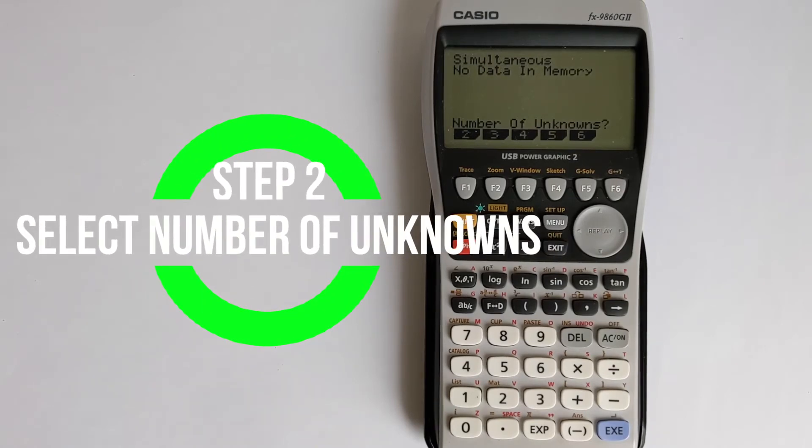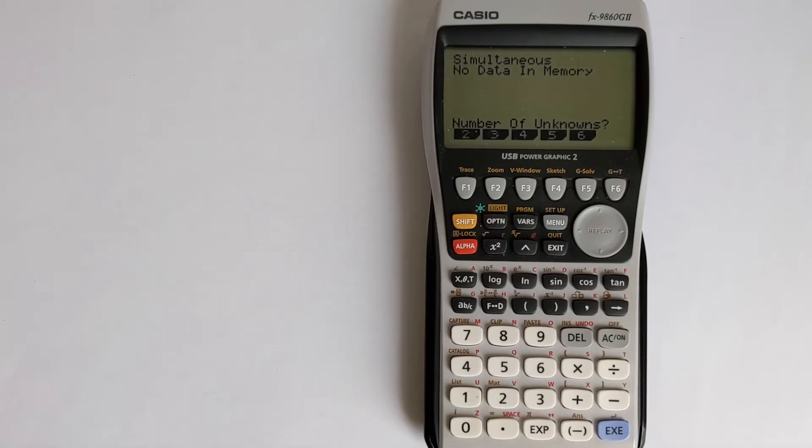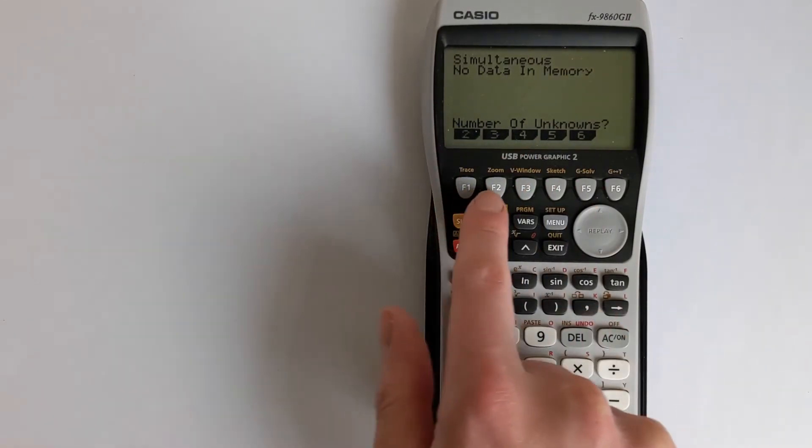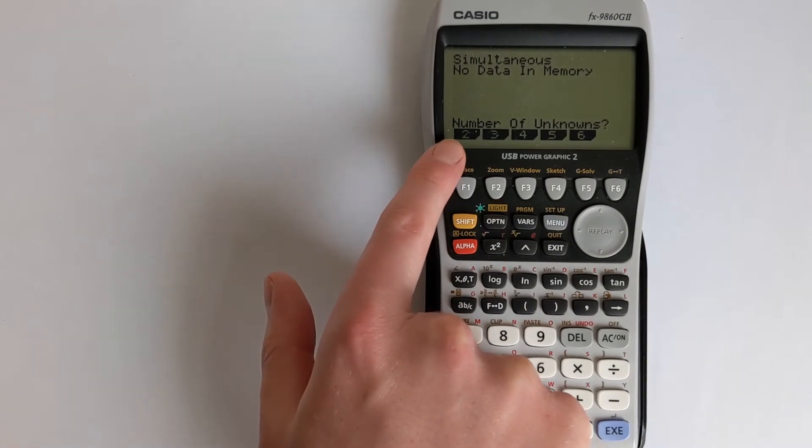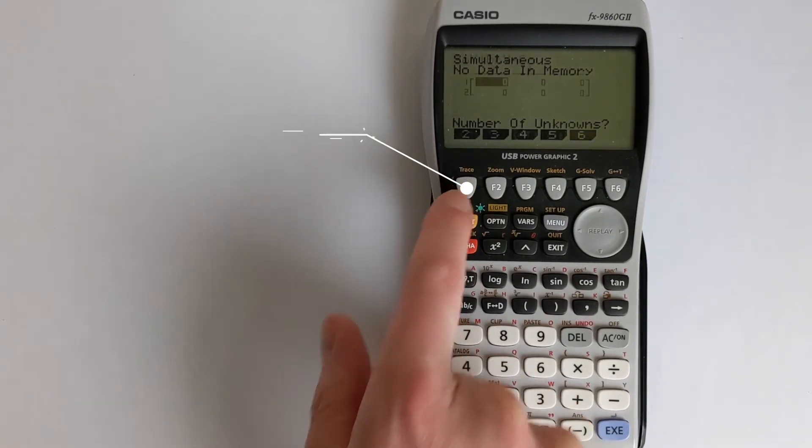Because we are solving x and y, x being one of the unknowns and y being the other unknown, we'll select two unknowns. If you had x, y and z you might select three and so on. These buttons line up with the buttons here, so we're going to go for two unknowns. Press button F1.